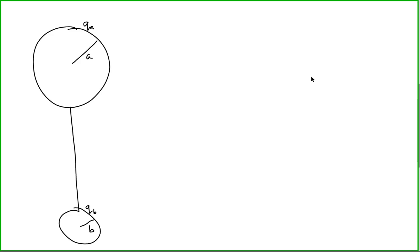The key connection between the spheres, besides the wire physically connecting them, is that since they are connected by a conducting wire, the electric potential on each sphere must be equal. This is because we've shown earlier that the electric potential in a conductor in electrostatic equilibrium is constant everywhere on the conductor. Since these are three conductors all connected, this is essentially one big conductor. Therefore, the electric potential on sphere A must be equal to the electric potential on sphere B.